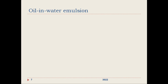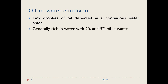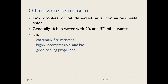We will see them one by one. Oil in water emulsion: tiny droplets of oil are dispersed in a continuous water phase. Generally, as mentioned, it is rich in water — only 2 to 5 percent of oil in water is the combination for oil in water emulsion. It is extremely fire resistant because the major content is water. Highly incompressible and has good cooling properties because of the high water content.